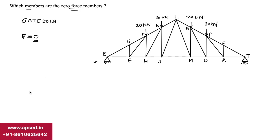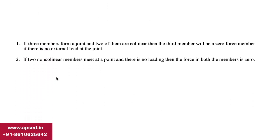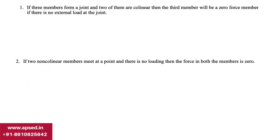When we talk about zero force members, there are two basic rules, and once we understand these two rules, we can solve any problem. The first rule says: if three members form a joint and two of them are collinear, then the third member will be a zero force member, provided there is no external load at that joint.